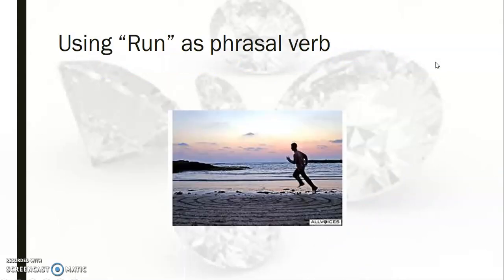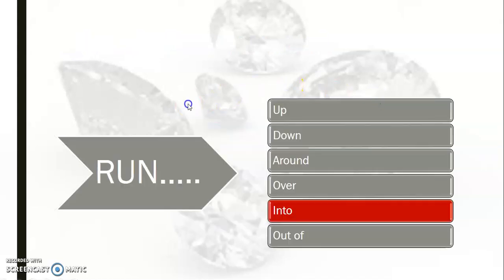Let's take a look at another verb used as a phrasal verb — let's look at 'run.' We know that 'run' is 'correr,' right? But what happens when we change it into a phrasal verb? There are a lot of phrasal verbs we can create out of 'run': run up, run down, run around, run over, run out of, and the one we're going to look at today — which is 'run into.' Run into is a very common phrasal verb, and it shows very well how the meaning of a phrasal verb can be completely different from the individual words.